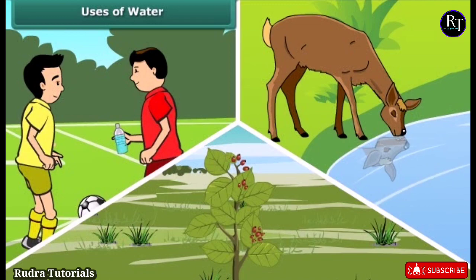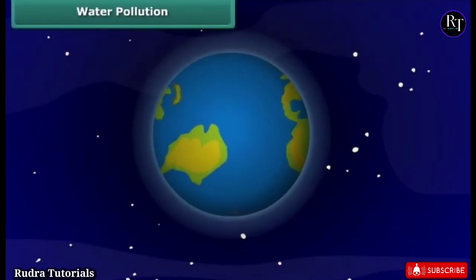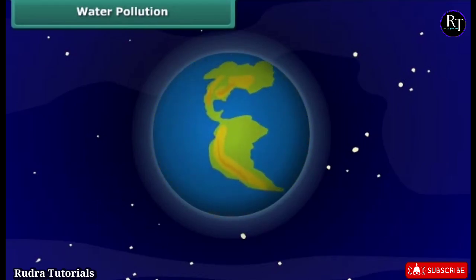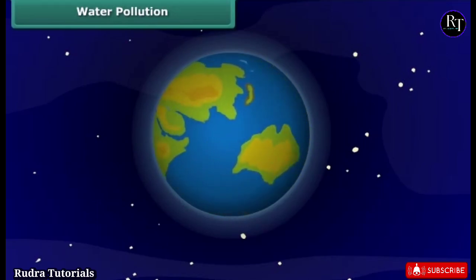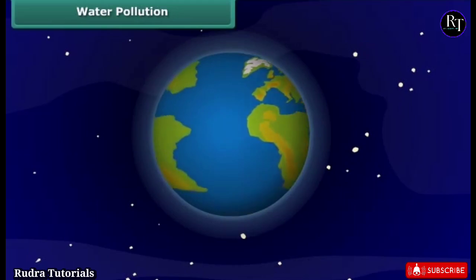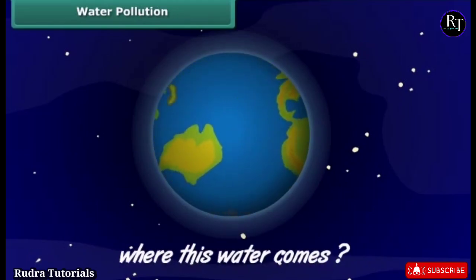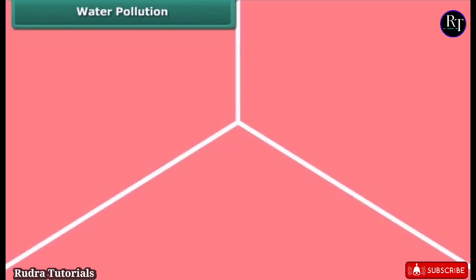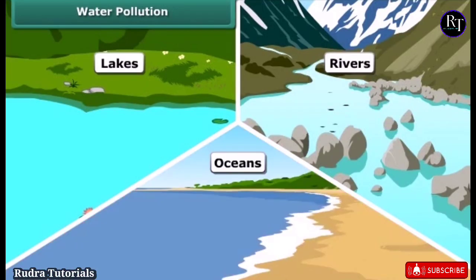Look at these activities. What is common in these activities? Yes, you are correct — all these activities highlight the uses of water. We know that 70% of the earth's surface is covered with water, and it is the most precious natural resource on our planet. Do you know where this water comes from? It comes from natural sources like lakes, rivers and oceans.